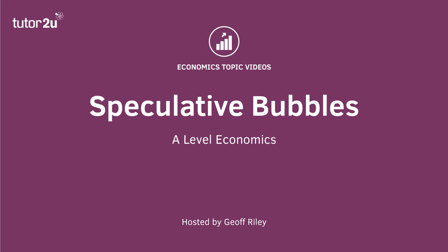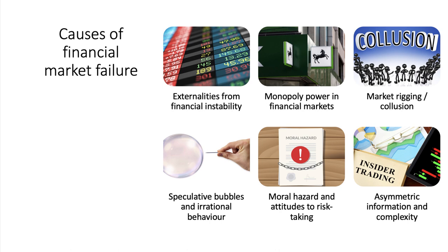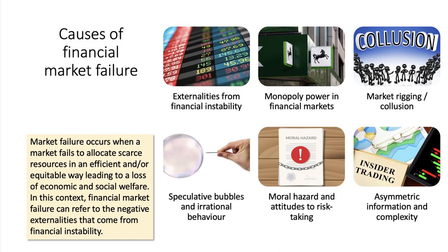Welcome to a revision video where we're going to take a few minutes to look at the economics of speculative bubbles in financial markets. For your A-level economics exam, it's important initially to focus on the generic meaning of what's called market failure and then apply it to financial markets. Here's a key definition of market failure: it's when a market — in this case the market for financial assets — fails to allocate scarce resources in an efficient and/or equitable way, and this then leads to a loss of economic and social welfare.